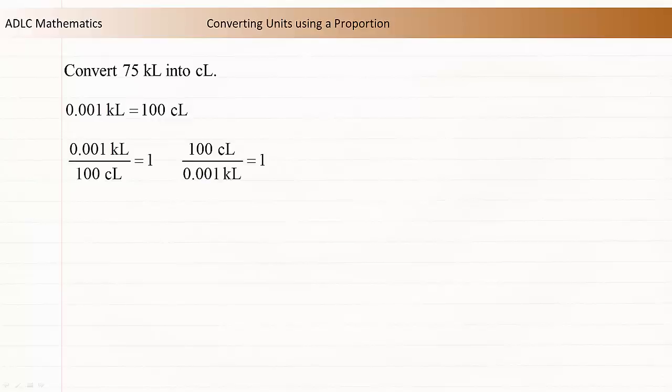If you're not sure how these conversion ratios were determined, review the conversion ratios video. Now we have two conversion ratios written as fractions equal to 1. We'll decide which one to use a bit later. For now, let's return to the original problem.